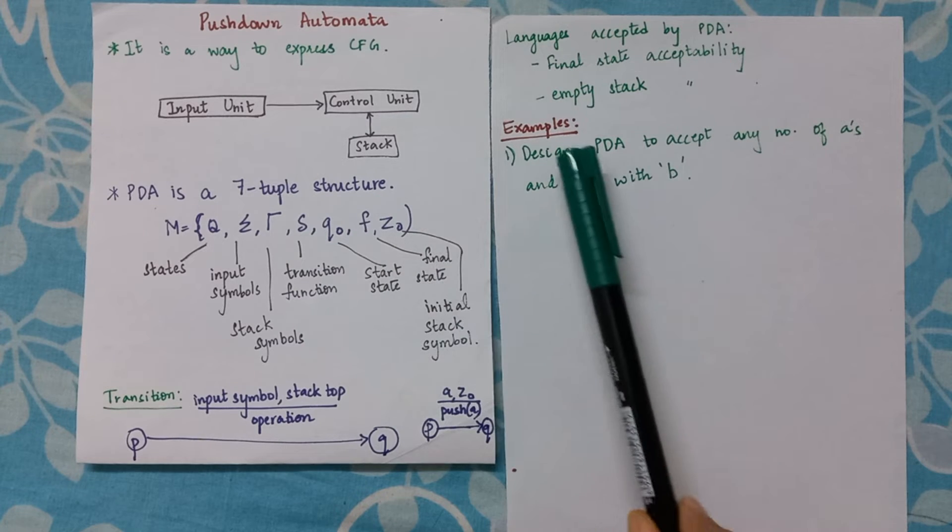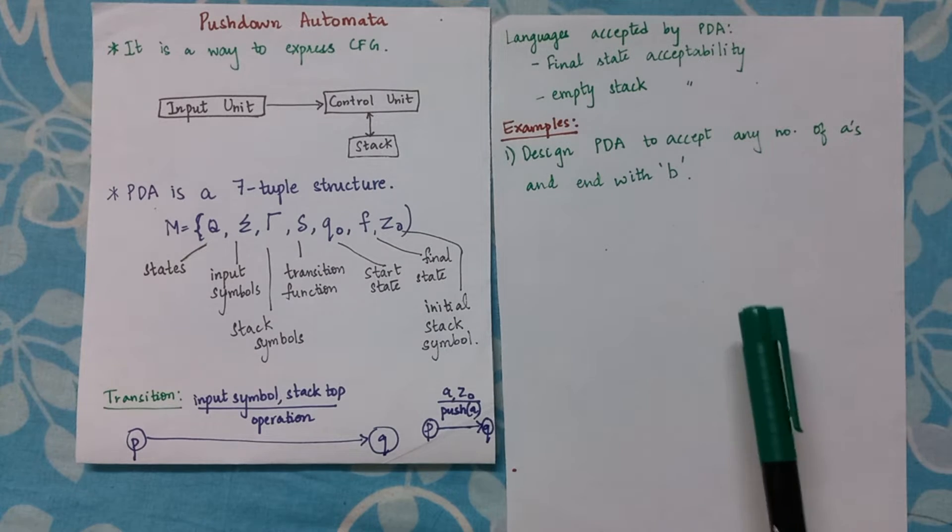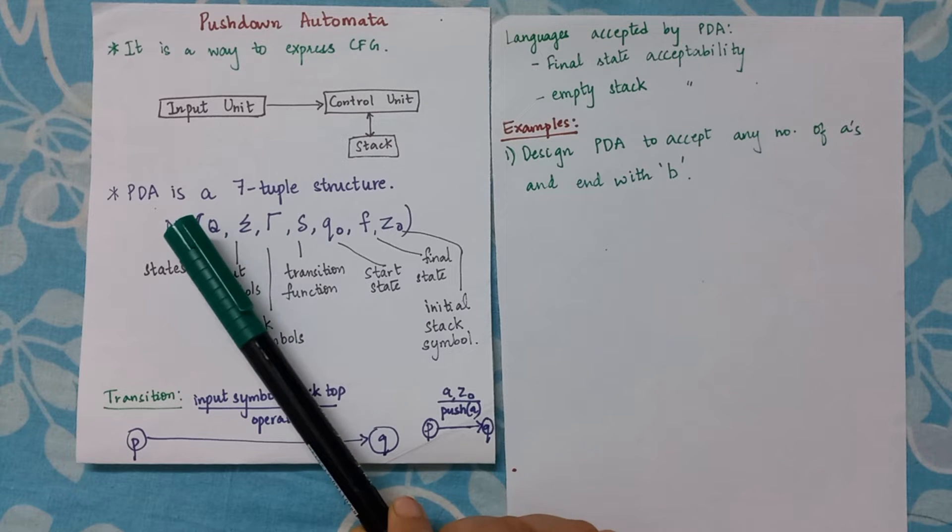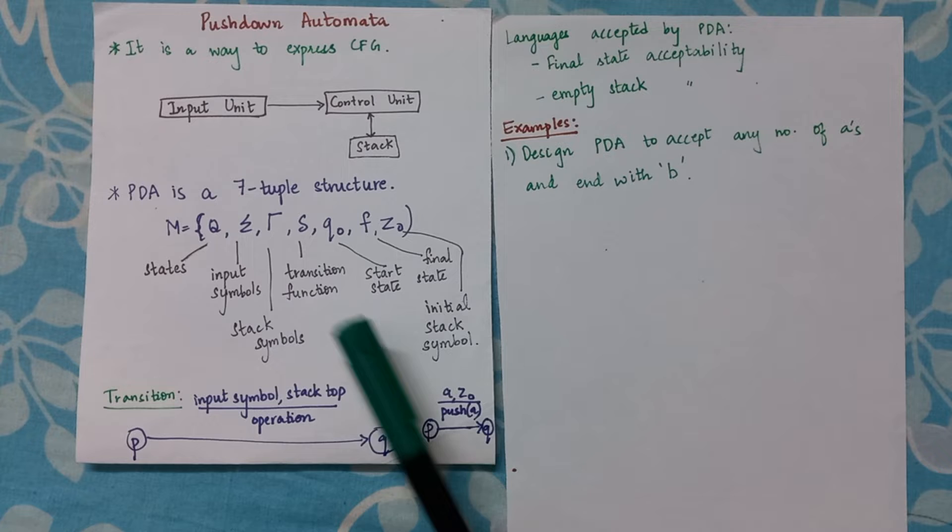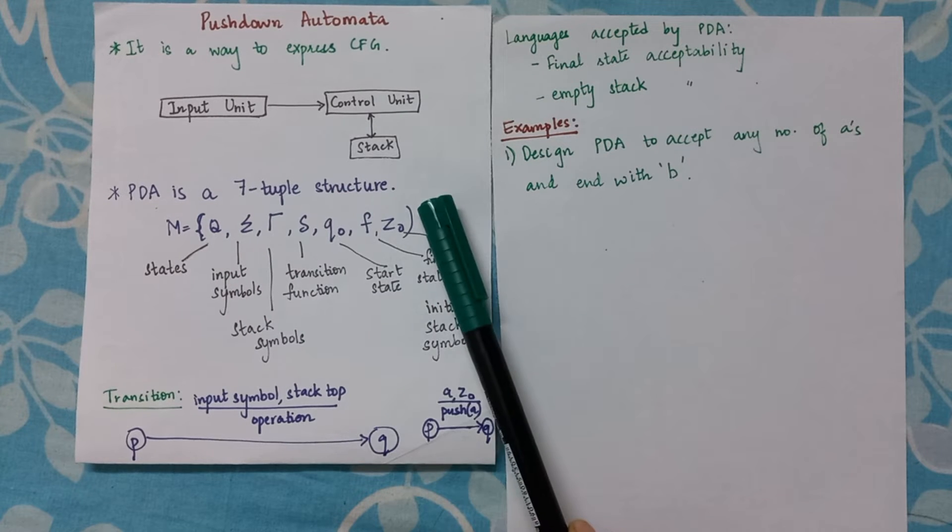We are going to, as we discuss the examples, it will become more clear. As of now I'm just discussing in brief about PDA. Now PDA is a seven-tuple structure.